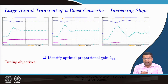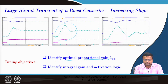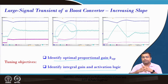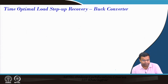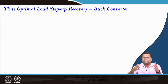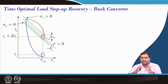What are the tuning objectives? Identify the optimal gain which will achieve recovery in approximately one switching cycle. Then, how to incorporate integral gain so that we can also ensure zero steady-state error — because only proportional gain is not enough. We want to summarize the process for linking the buck converter current mode control with the phase-plane trajectory and how to achieve those gains mathematically.